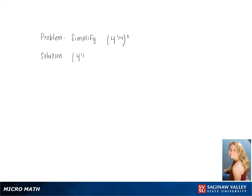Simplify 4 to the 1/4th, cubed. We start by multiplying the exponents, giving us 4 to the 3/4ths.